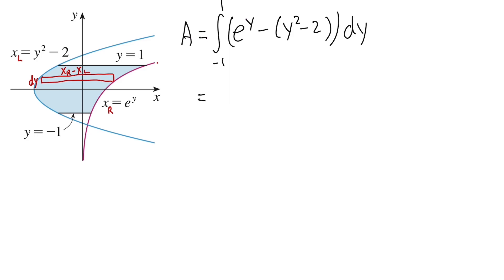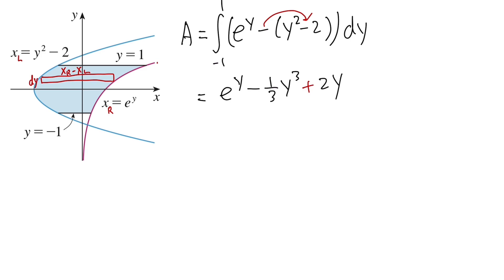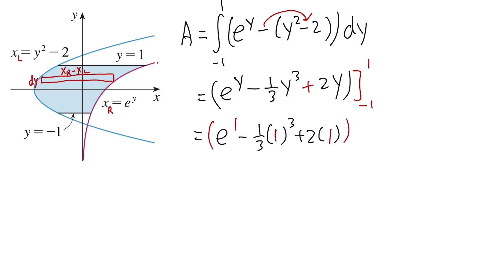Let's integrate. The integral of e to the y is e to the y. For the rest, distribute the negative: the integral of y squared becomes 1/3 y cubed, and distributing the negative on negative 2 gives a positive 2y. Now plug in the limits. Plugging in 1: e to the 1 minus 1/3 times 1 to the third plus 2 times 1. Plugging in negative 1: e to the negative 1 minus 1/3 times negative 1 to the third plus 2 times negative 1.